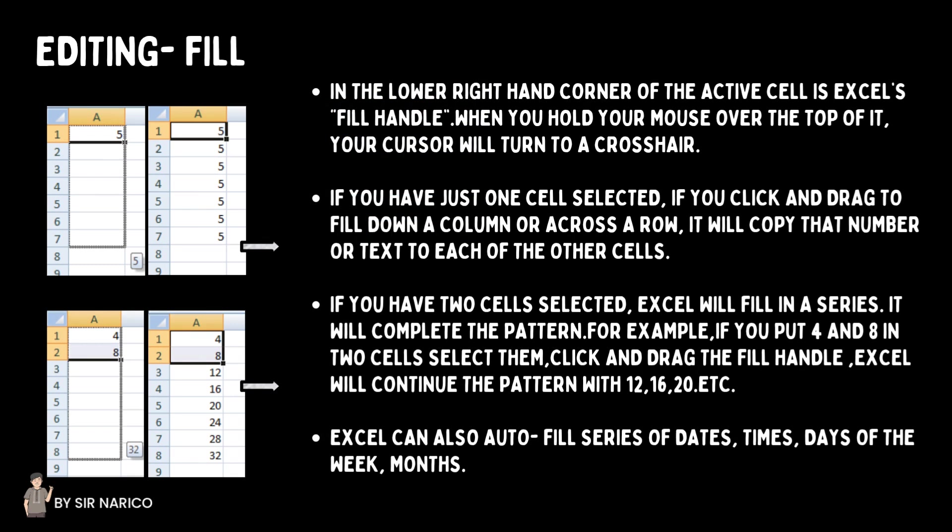In the lower right-hand corner of the active cell is Excel's fill handle. When you hold your mouse over the top of it, your cursor will turn to a crosshair. If you have just one cell selected and click and drag to fill down a column or across a row, it will copy that number or text to each of the other cells. If you have two cells selected, Excel will fill in a series and complete the pattern — for example, if you put 4 and 8 in two cells and drag the fill handle, Excel will continue with 12, 16, 20, etc. Excel can also auto-fill series of dates, times, days of the week, and months.